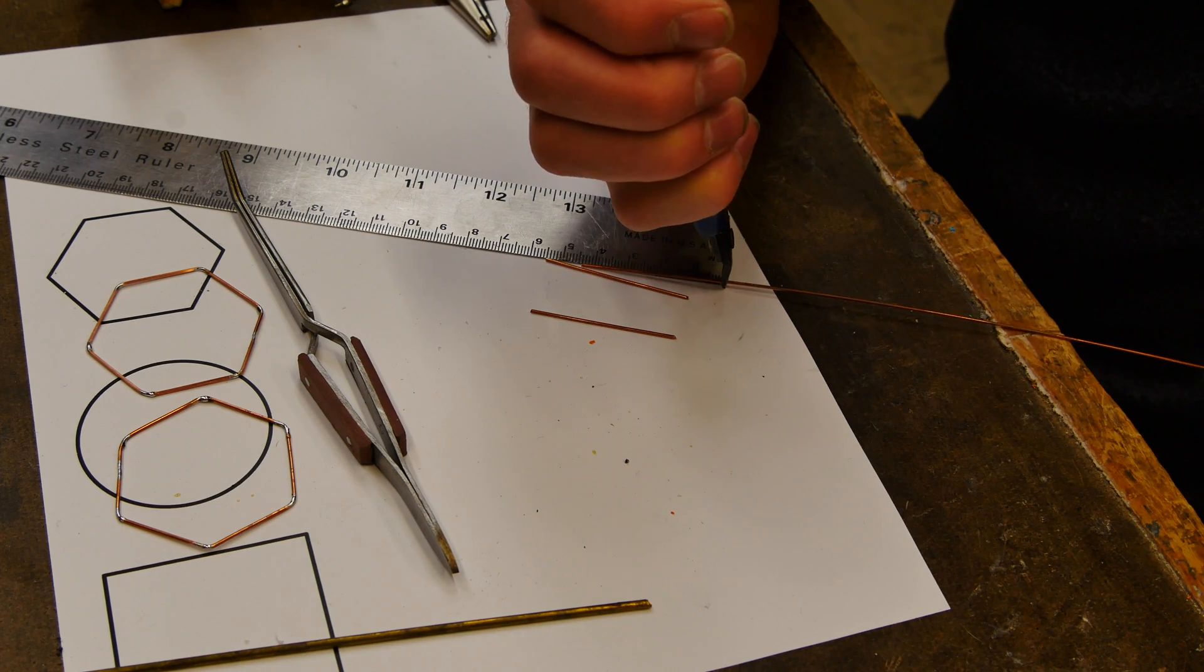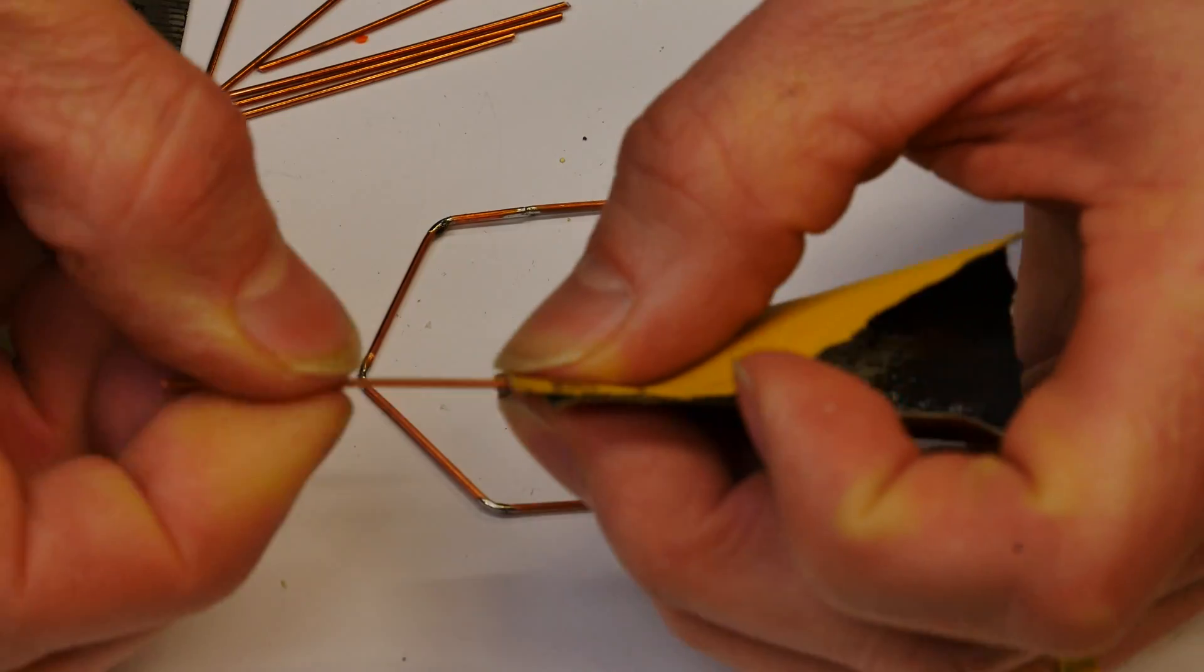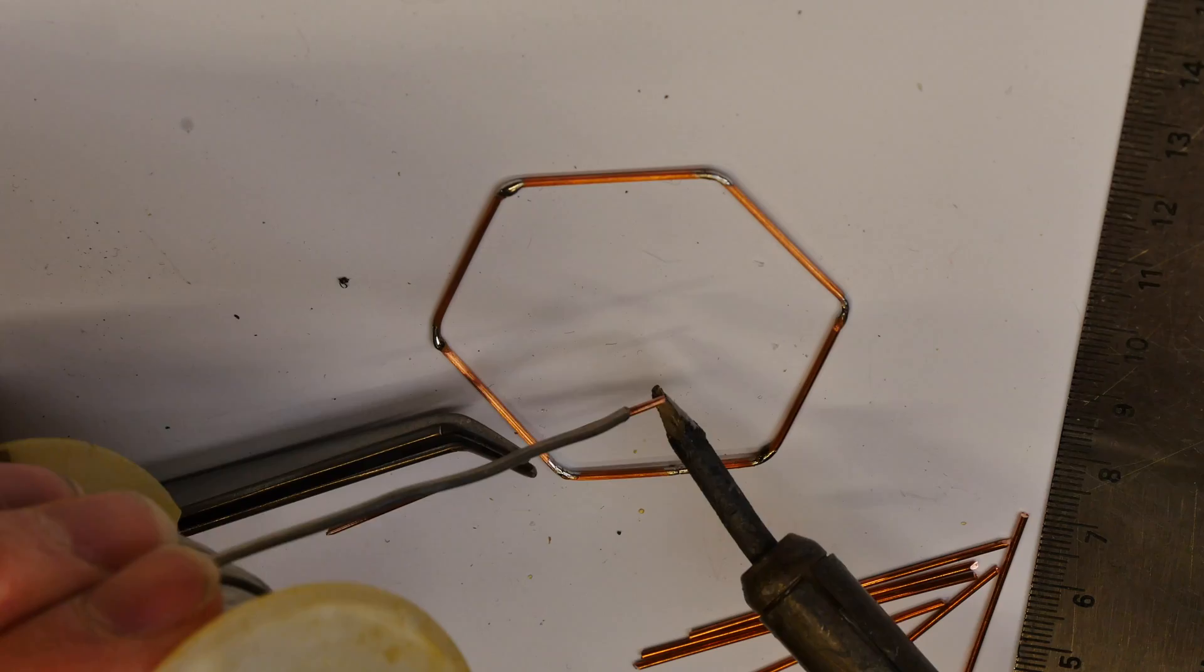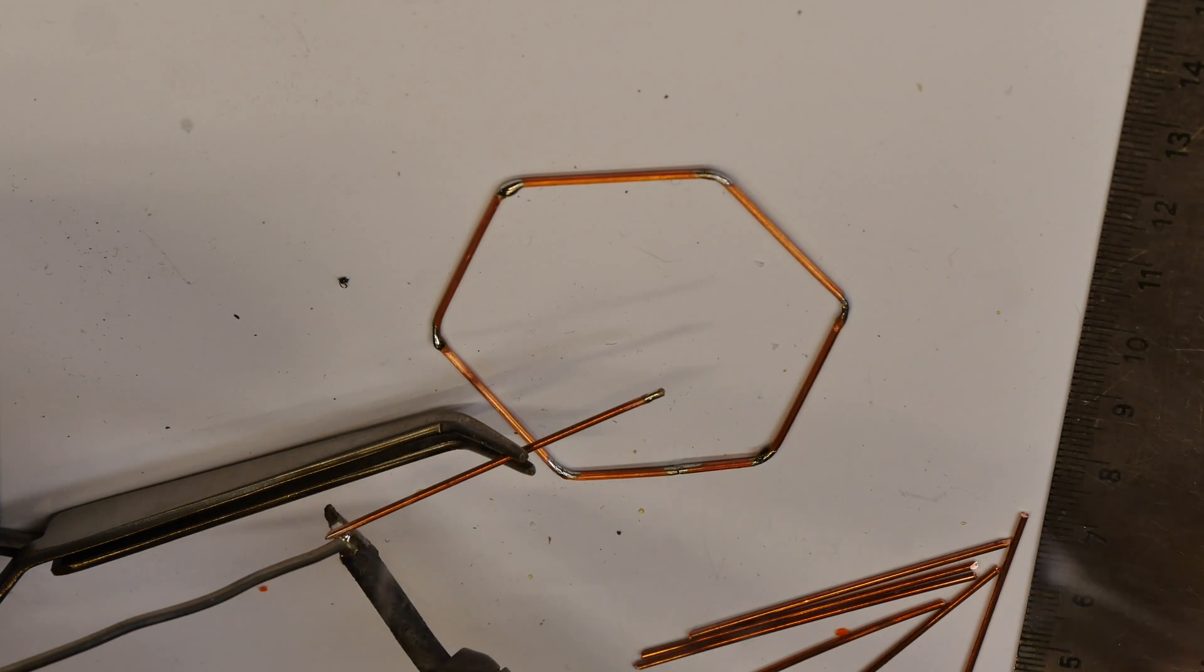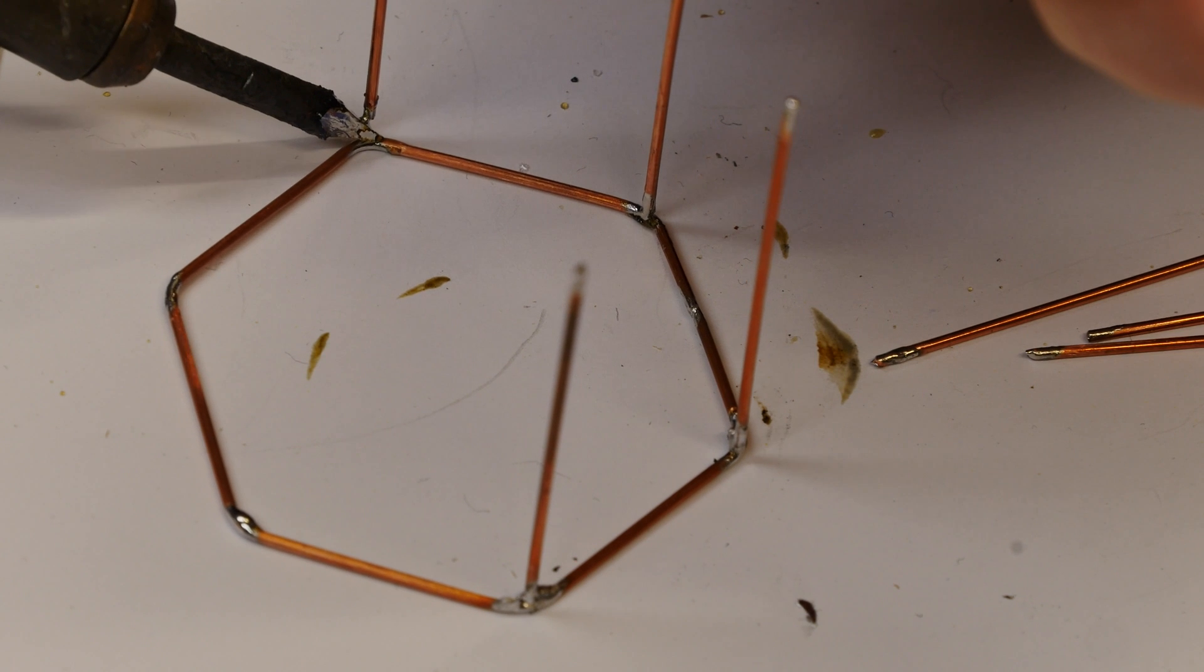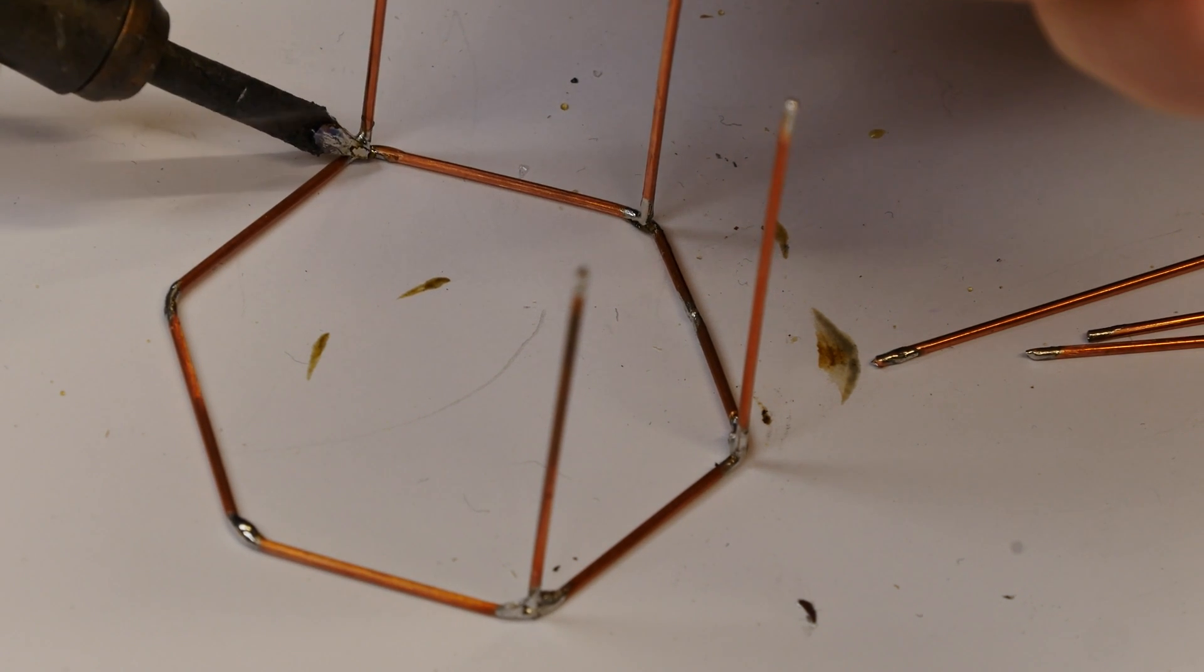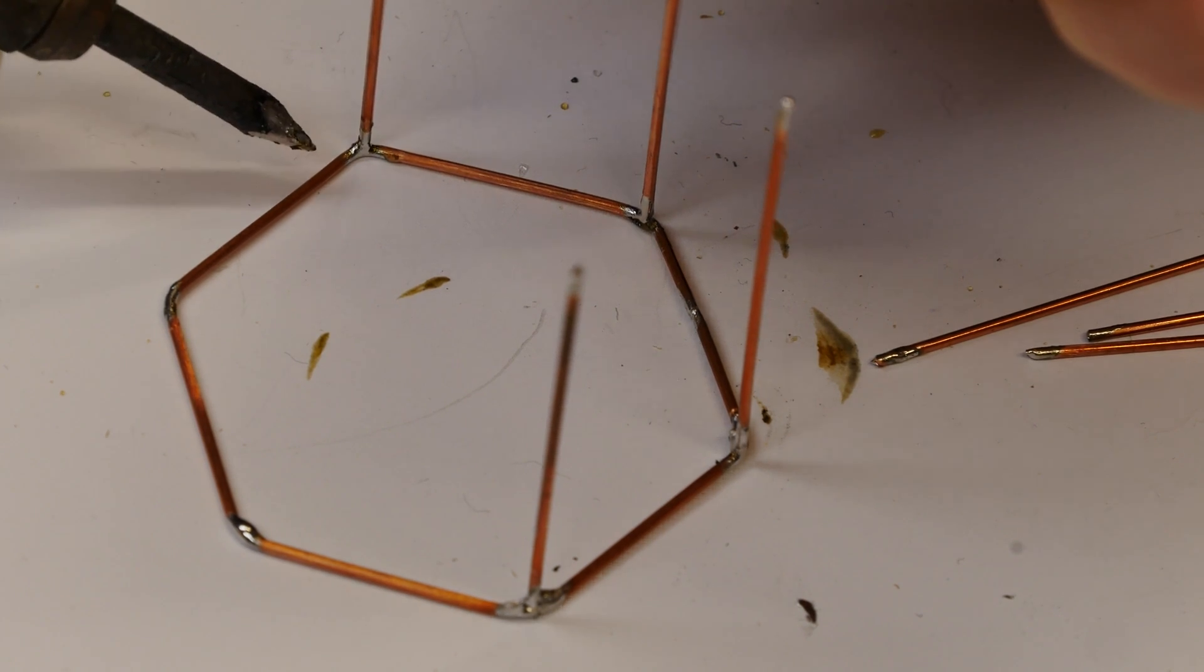So we're gonna tin up the corners of this hexagon because we're gonna add little legs to connect the two pieces. I'm gonna cut some to my desired length and then I'm gonna sand those down to remove the oxidation. And I'm gonna tin the ends of all of the little legs so that I can solder them in the corners of the hexagon to make my shape.